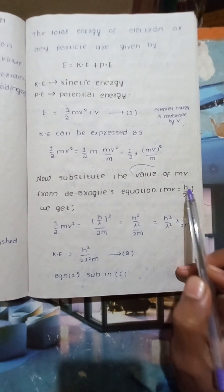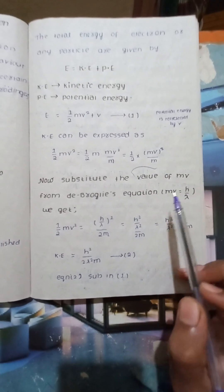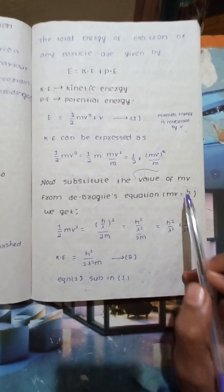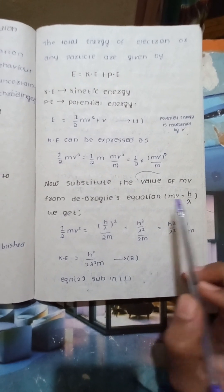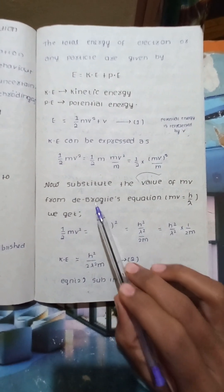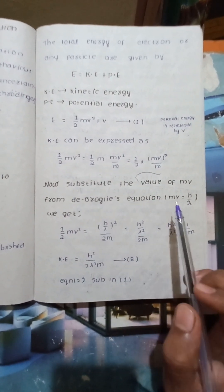From de Broglie's equation, mv = h/λ. So the total energy can be rewritten using this relation. This is the de Broglie equation that we will now substitute.